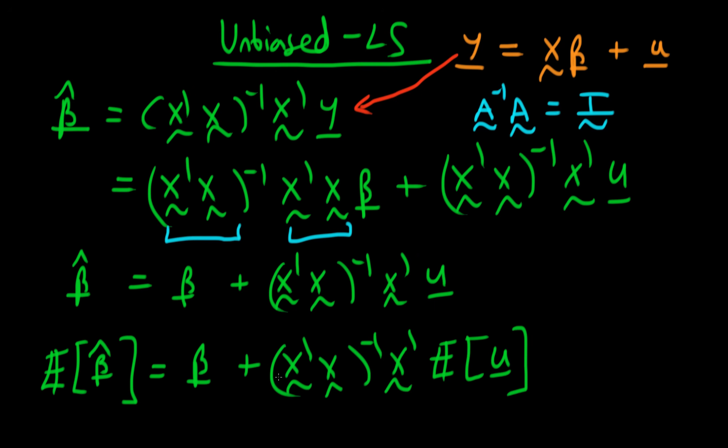So our expectations operator even though it's operating on all of this stuff it just passes through the first terms here and I'm just left with the expectations of u which we know under the zero conditional mean of errors is in fact zero.